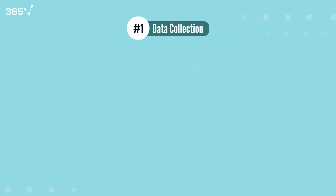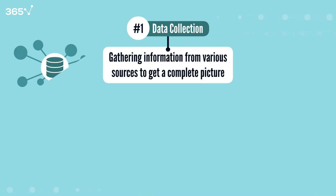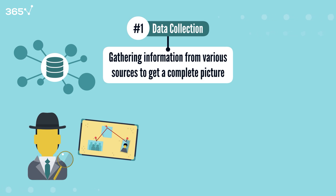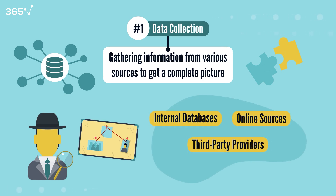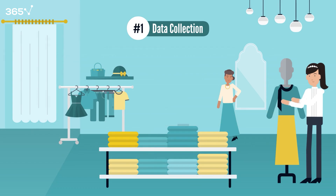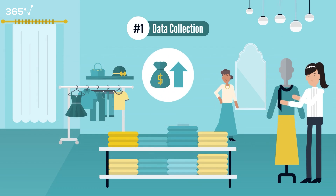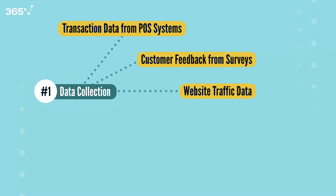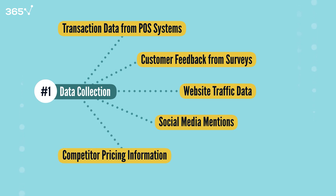Concept 1: Data Collection. Data collection is the process of gathering and measuring information from various sources to get a complete and accurate picture. Think of it like gathering evidence — just as a detective needs multiple pieces of evidence to solve a case, analysts need data from various sources to solve business problems. This includes internal databases, online sources, and third-party providers. For example, imagine a retail store wanting to improve sales — they might collect transaction data from point-of-sale systems, customer feedback from surveys, website traffic data, social media mentions, and competitor pricing information.